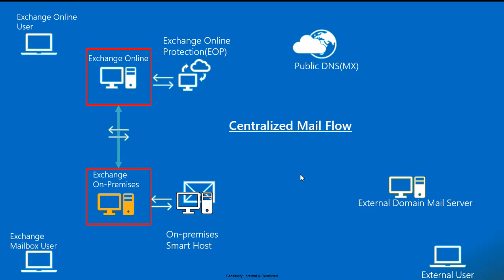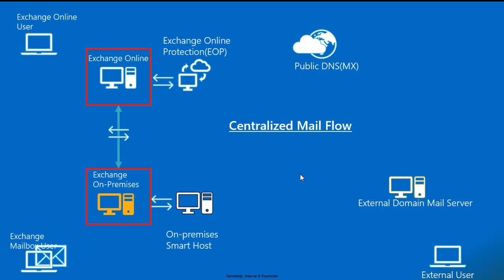Once the smart host receives the email, it sends the mail to the internal transport servers using connectors on port 25. The internal transport servers then validate where to deliver the mail. If it is an internal mailbox, the mail is delivered directly to the user's mailbox. If it is a remote mailbox, the mail is sent back through the smart host using the connector.